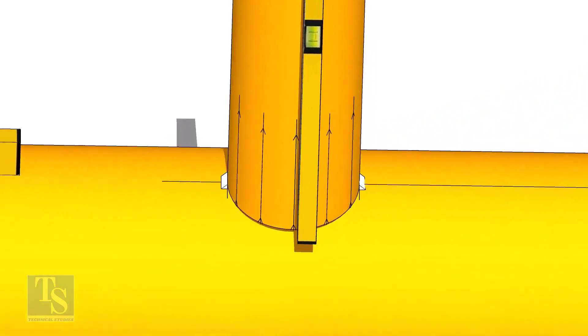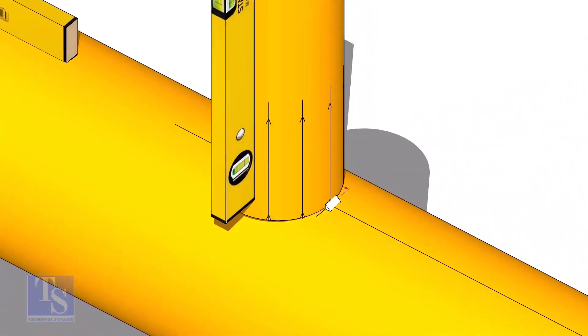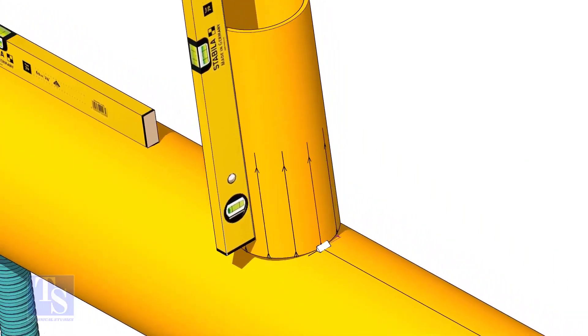Now, make sure the pipe header and the branch are horizontally and vertically level. If required, strengthen the tack weld.